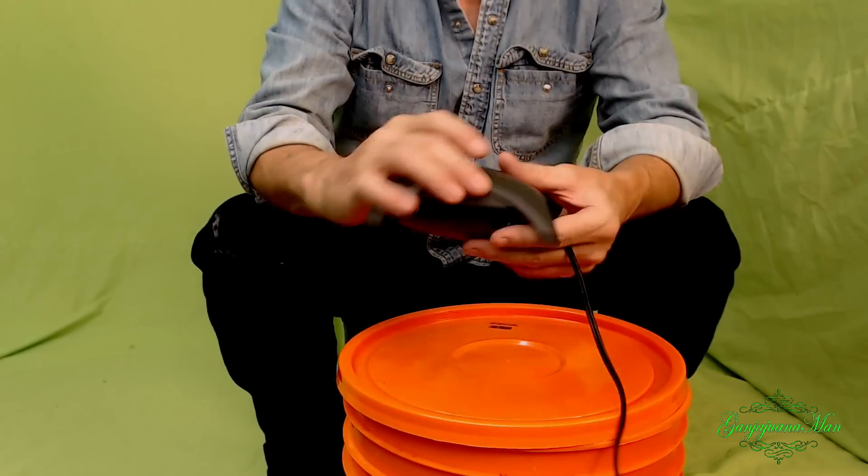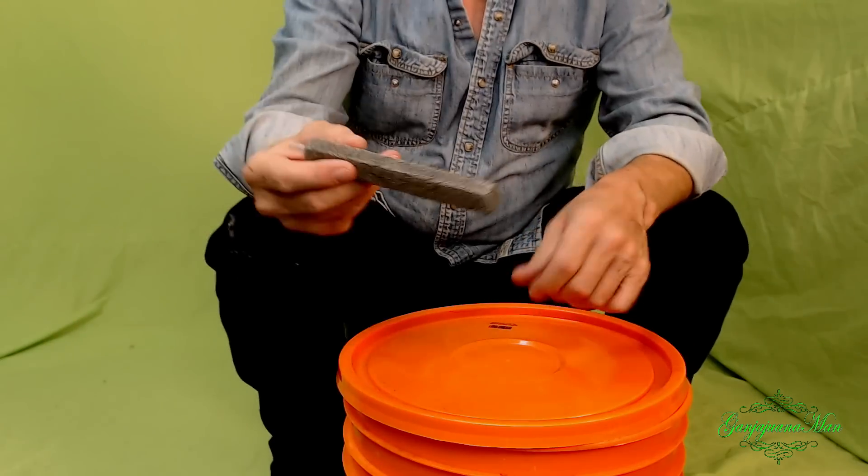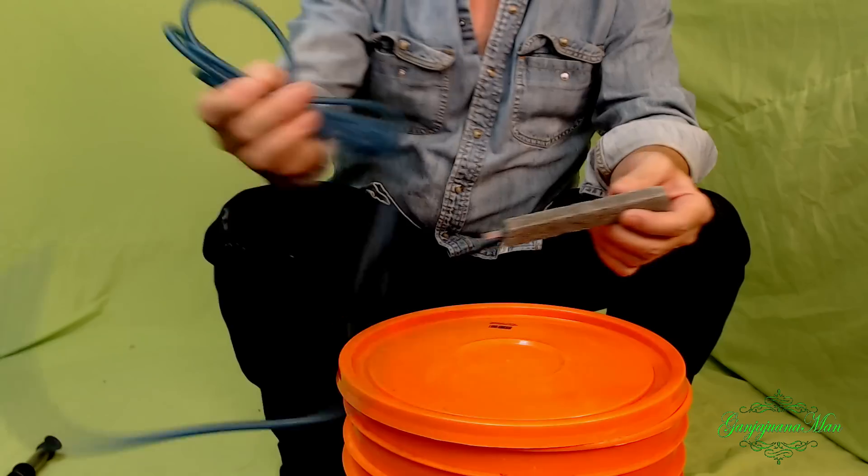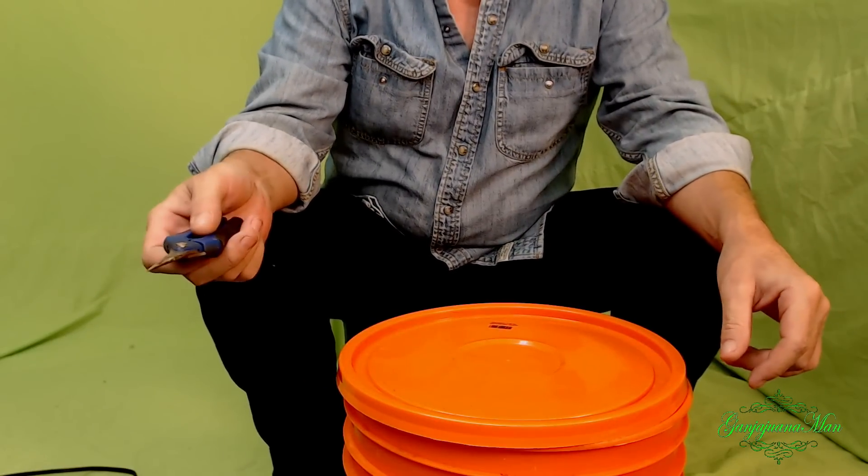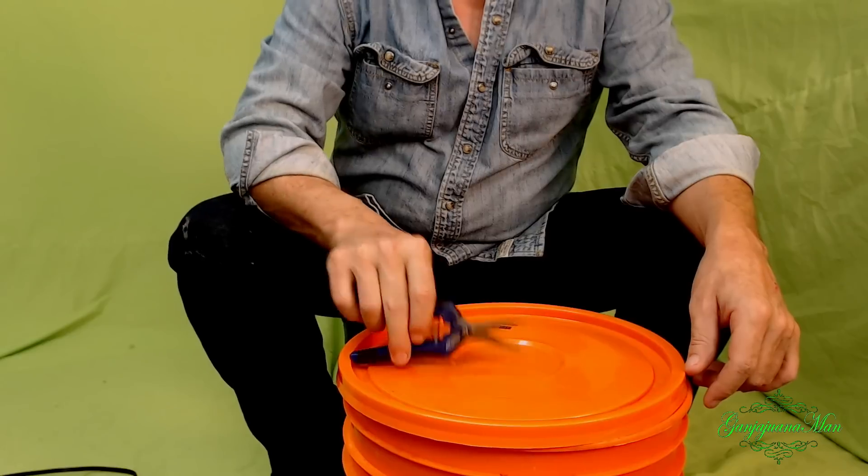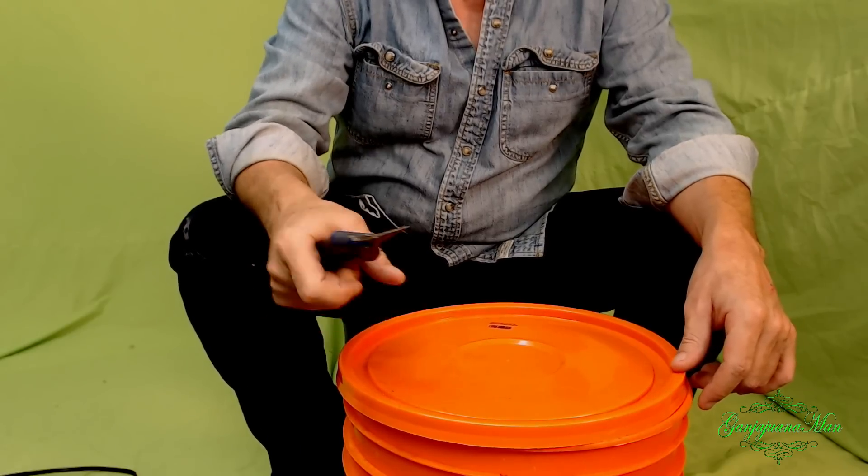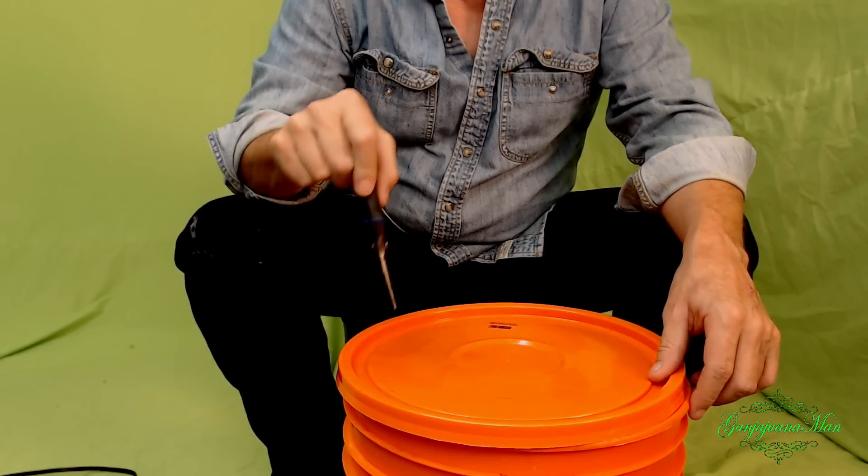We will need our air pump, then we're going to need an air stone, we're going to need some hose. As far as tools, the only thing we're going to need, I'm keeping it simple, a pointy set of snips here. I'm going to use them to poke holes in the lid.